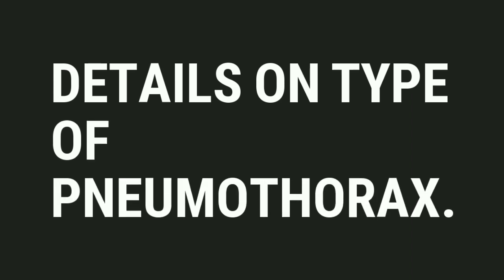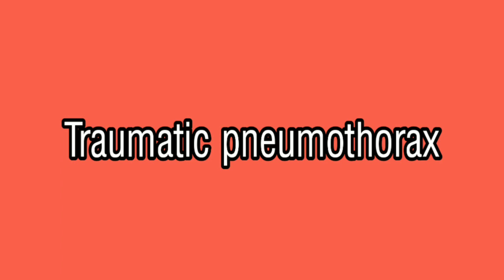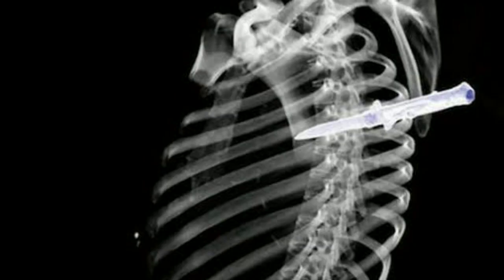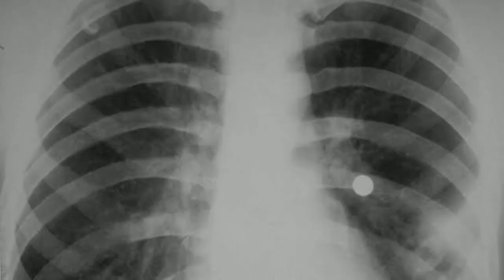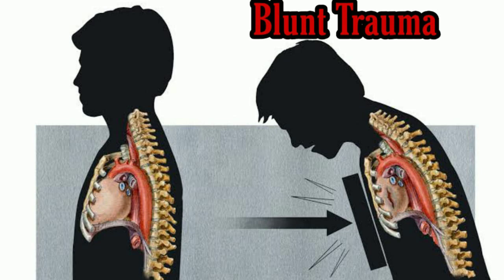The first type is traumatic pneumothorax. Traumatic pneumothorax may result from any penetrating injury such as a stab wound, gunshot wound, or injury from an impaled object. Blunt trauma from a car accident, a fall from height, or a crushing chest injury may also cause traumatic pneumothorax.